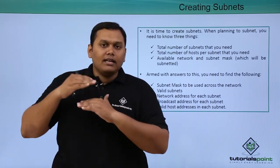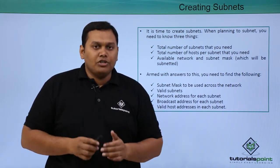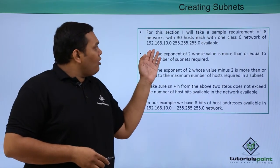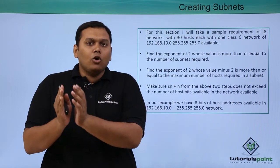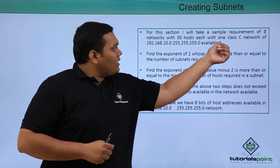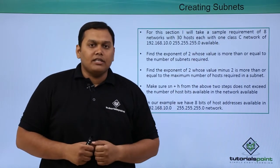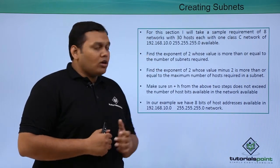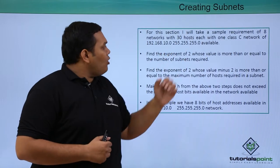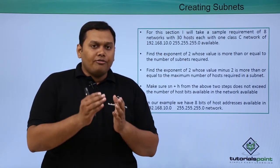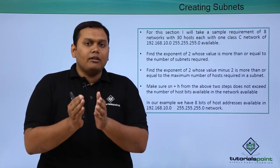We will take a simple example of 8 networks. We require 8 networks with 30 hosts, with one Class C network available: 192.168.10.0 with subnet mask value of 255.255.255.0.